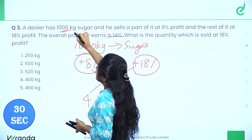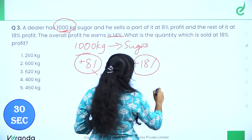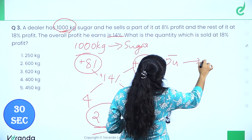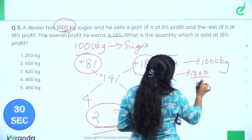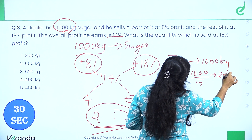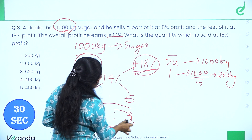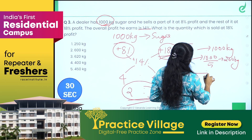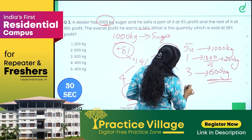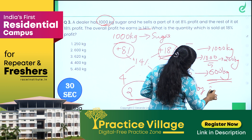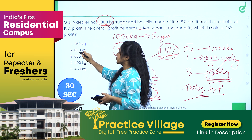We have 1000 kilograms total — that is 5 units. So 1 unit is 1000 divided by 5, which equals 200 kg. The 18% profit portion is 3 units, so 3 times 200 equals 600 kg. The answer is 600 kg — option 2.